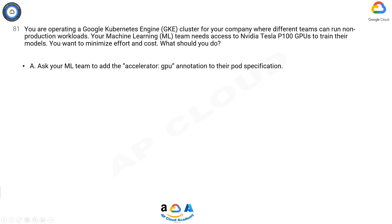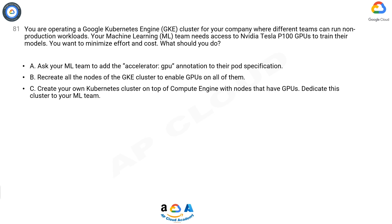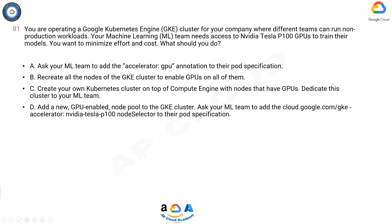A. Ask your ML team to add the accelerator GPU annotation to their pod specification. B. Recreate all the nodes of the GKE cluster to enable GPUs on all of them. C. Create your own Kubernetes cluster on top of Compute Engine with nodes that have GPUs, and dedicate this cluster to your ML team. D. Add a new GPU-enabled node pool to the GKE cluster, and ask your ML team to add the cloud.google.com/gke-accelerator: nvidia-tesla-p100 node selector to their pod specification.